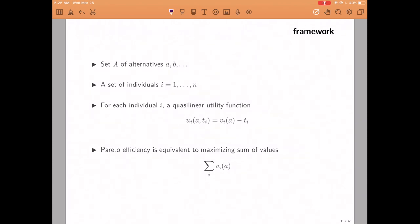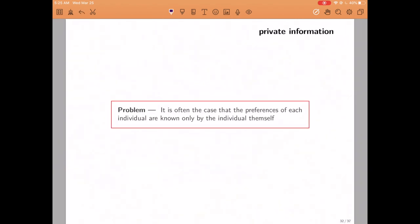I'll remind you that this kind of utility function is not without loss of generality. We typically think of quasi-linear utility function to be a good approximation of preferences when there are no income effects, so people are not really getting significantly richer or poorer by the decisions that we're considering. It's going to be very useful for us because it's going to allow us to characterize Pareto efficiency using the utilitarian criteria. An outcome is going to be efficient, and an alternative a is going to be efficient if and only if it maximizes the sum of the values of the different members of society.